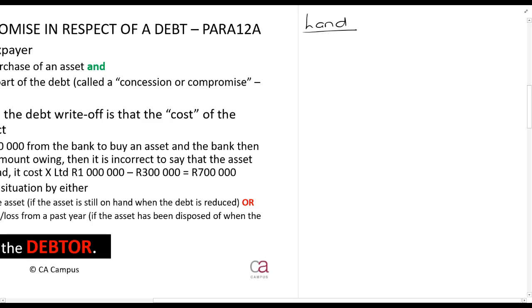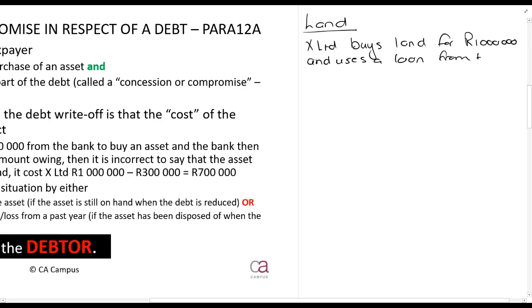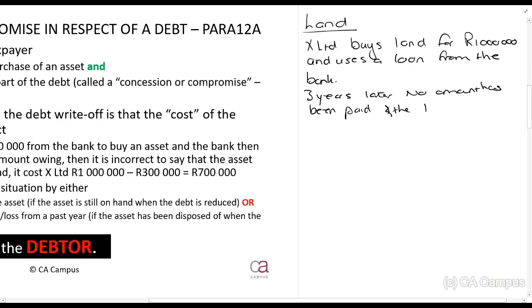This principle applies to everything. Land is nice and simple with no allowances. So X Limited buys land for one million rand and uses a loan from the bank. Three years later, no amount has been paid and the bank writes off the loan. This is a simple scenario - not as common - but the principle applies.